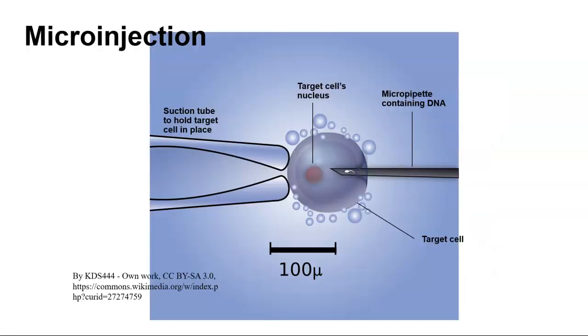Another method is what we call microinjection. In this particular case you've got a target cell in there with a nucleus. This shows a micropipette that contains DNA in it that is inserted into the cell and the DNA is then placed into the nucleus. You can see a suction tube that is in place to hold the target cell in place. By doing this you can actually add DNA or subtract DNA from a particular cell. This is called microinjection.